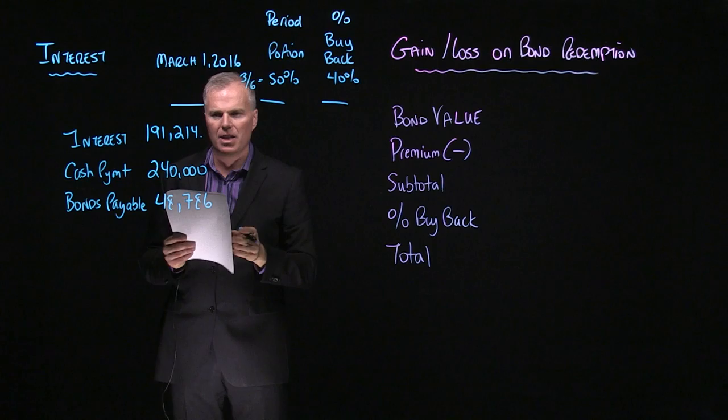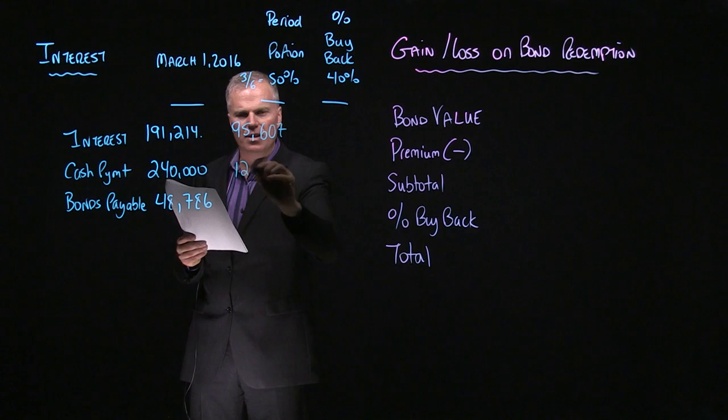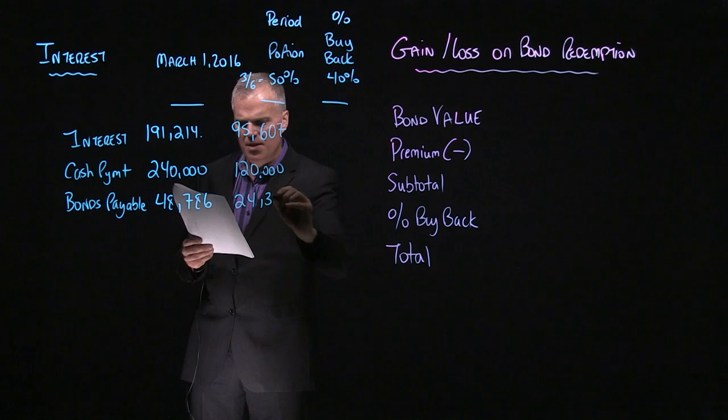That's how I get 50%. So if I take those numbers now and I calculate 50% of that, here's what I get. $95,607. And I get $120,000 here and $24,393.